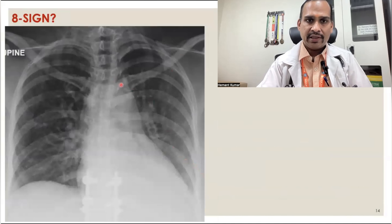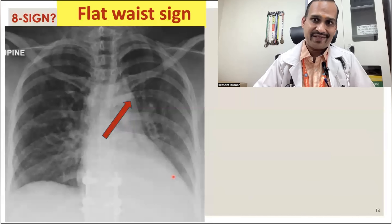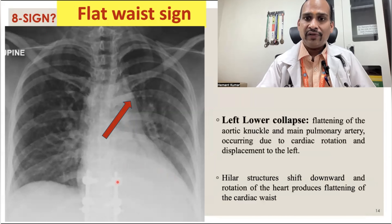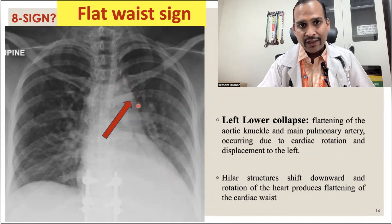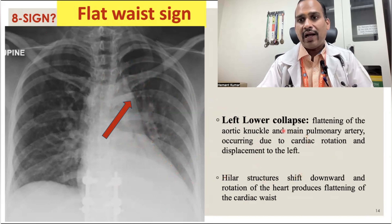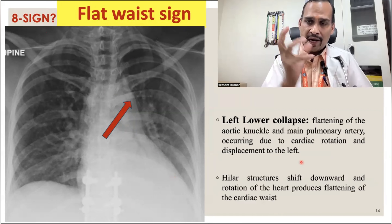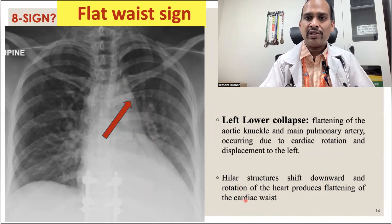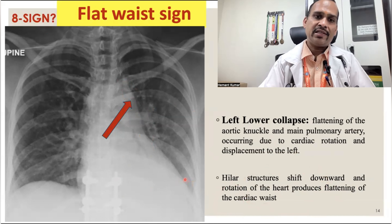Sign 8 is the flat waist sign, occurring in left lower lobe collapse. Because of left lower lobe collapse, there is flattening of the aortic knuckle — we cannot make out the aortic knuckle or the pulmonary artery. There is loss of contour of the aortic arch and pulmonary artery due to rotation of the heart. The hilar structure shifts downward, and rotation of the heart produces flattening of the cardiac waist — this is the flat waist sign.